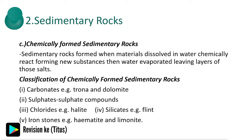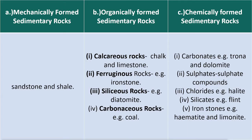Chemically formed sedimentary rocks are formed when materials dissolved in water chemically react, forming new substances; then water evaporates leaving layers of salts — these include carbonates, sulfates, chlorides, and ironstones. From the summary table: mechanically formed examples are sandstone and shale; organically formed examples include chalk, limestone, ironstone, diatomite, and coal; chemically formed examples include carbonates, sulfates, chlorides, silicates, and ironstones.